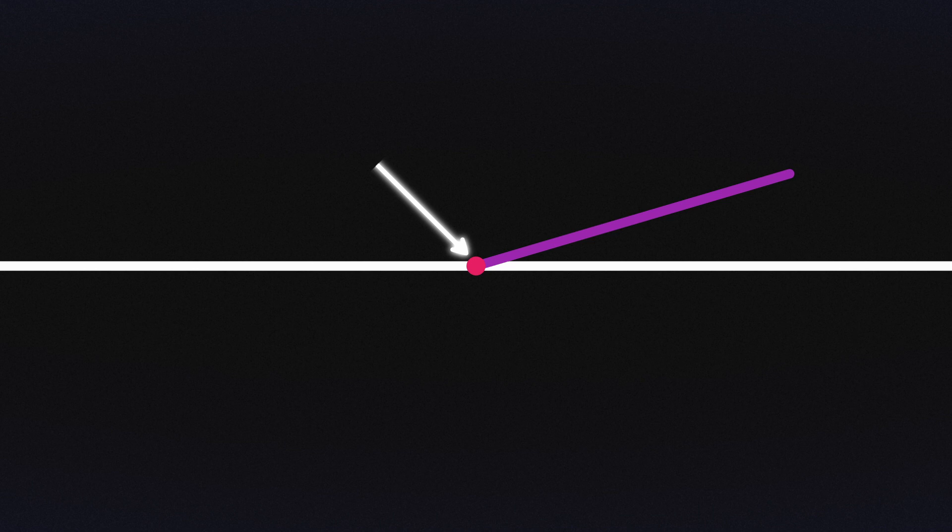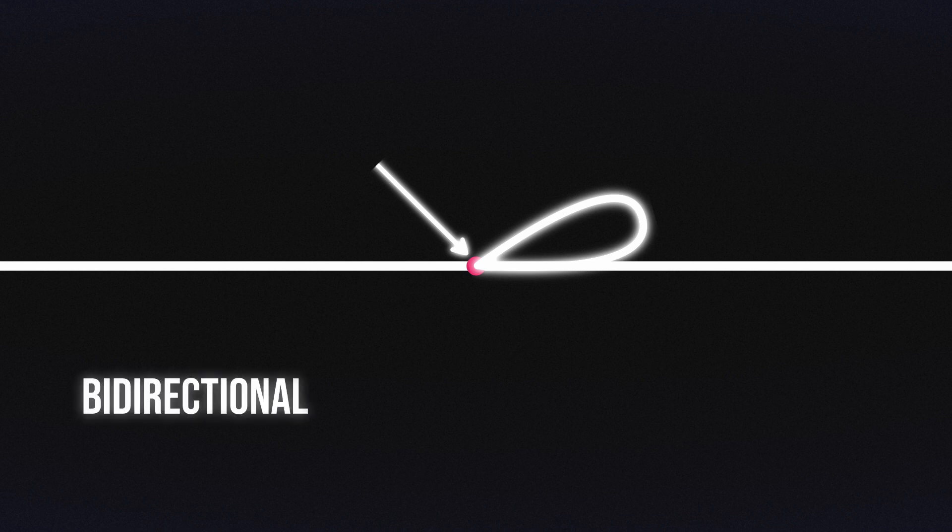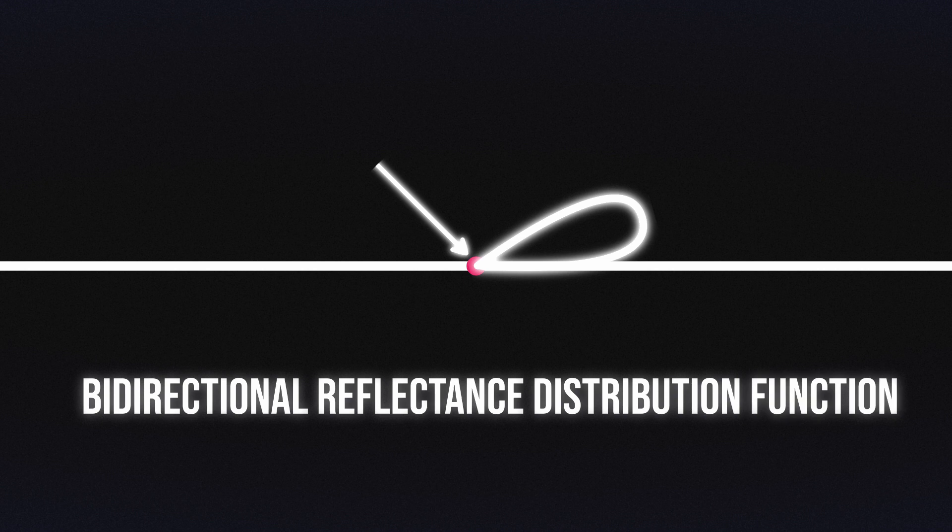In path tracing, we represent this as a function of the intersection point, the direction in the hemisphere currently being used, and the outgoing direction, which is the negation of the ray's direction. So, what should we call this function? Just to make things nice and simple, let's call this perhaps a bidirectional reflectance distribution function. That sounds fun. Let's just go with BRDF for now.